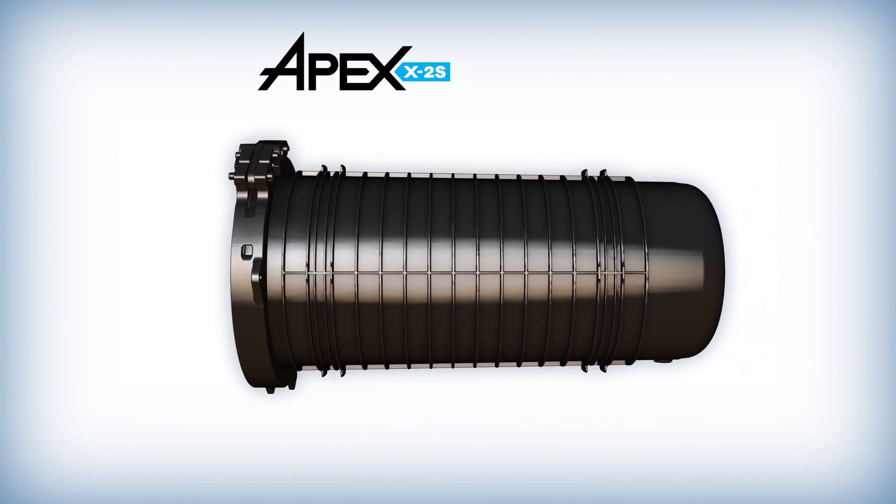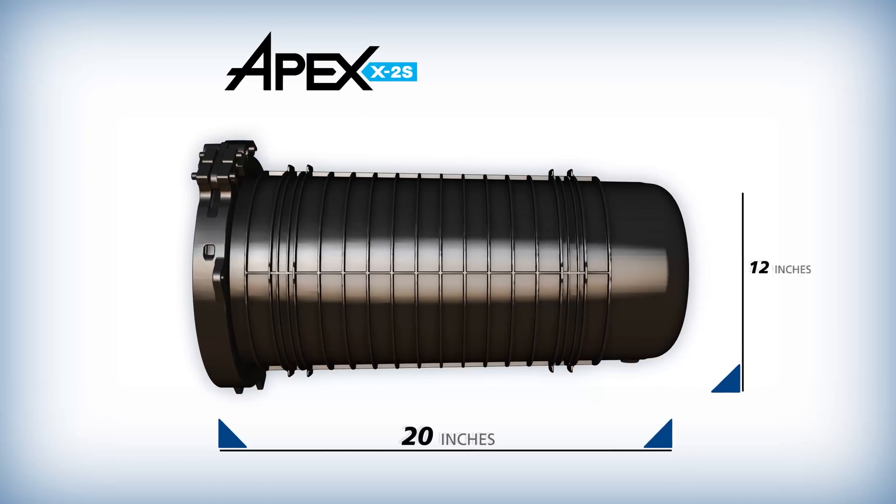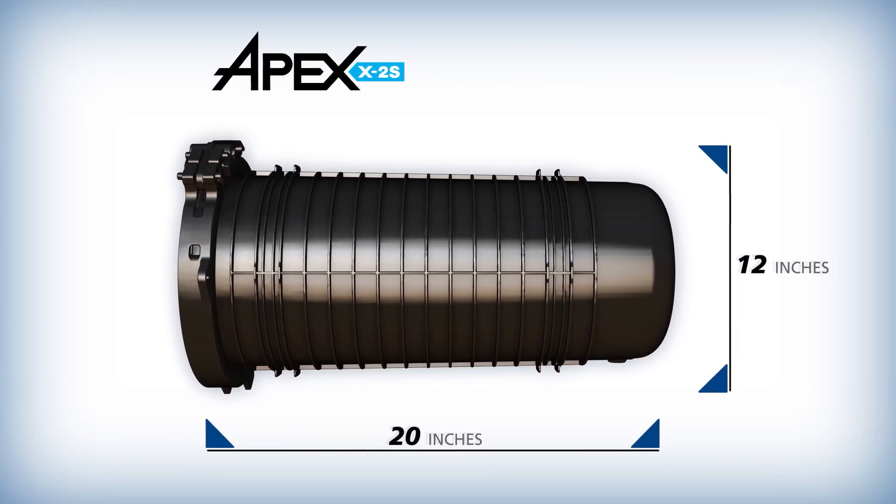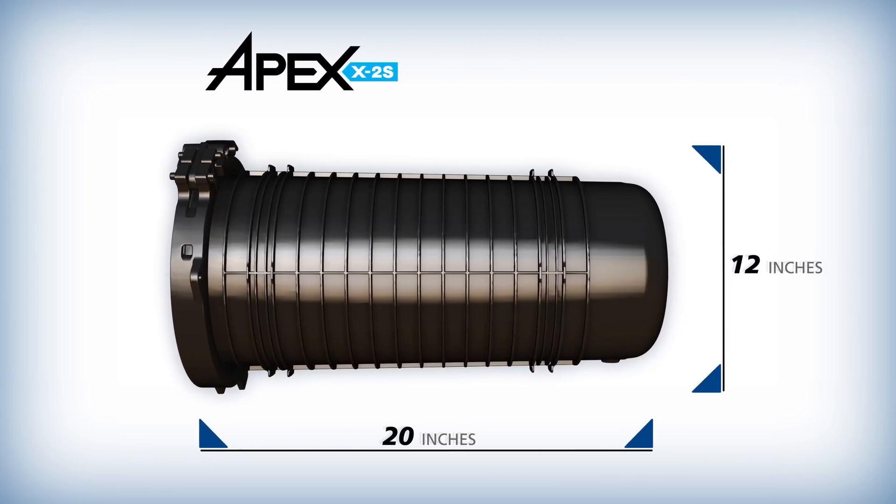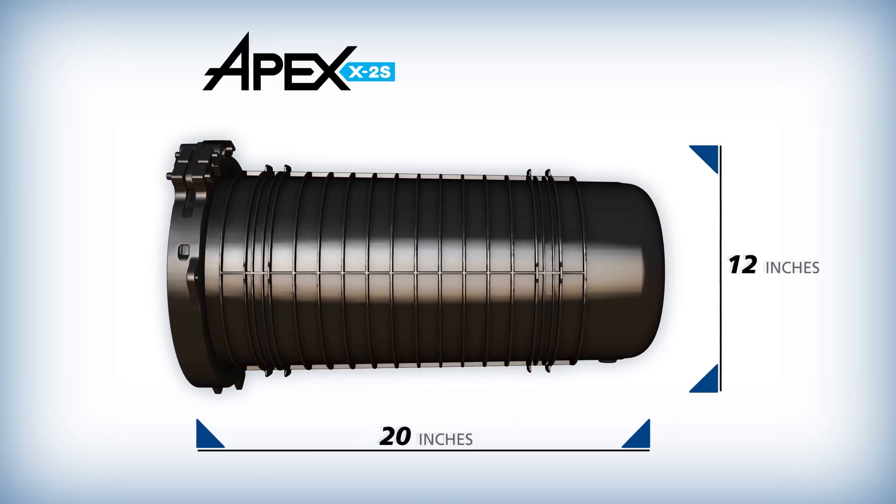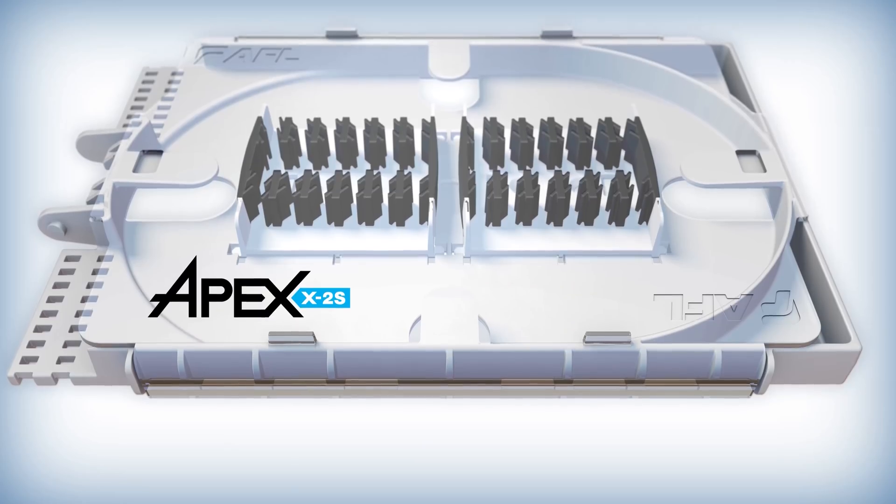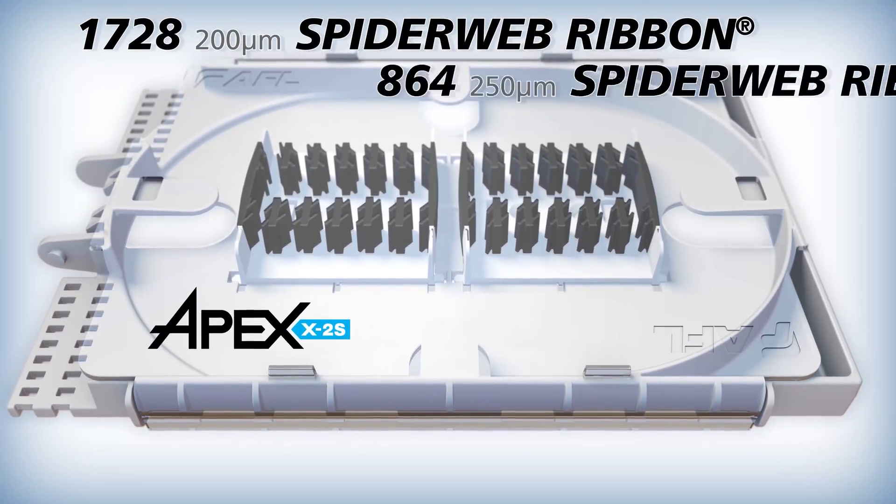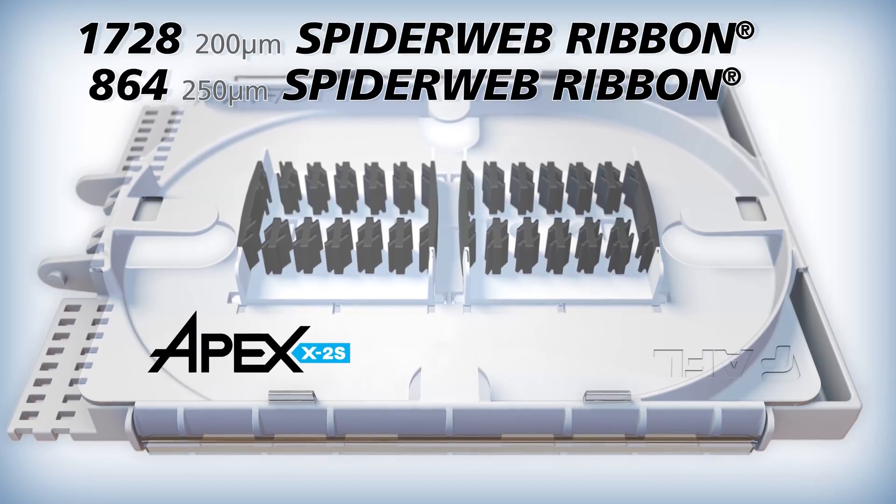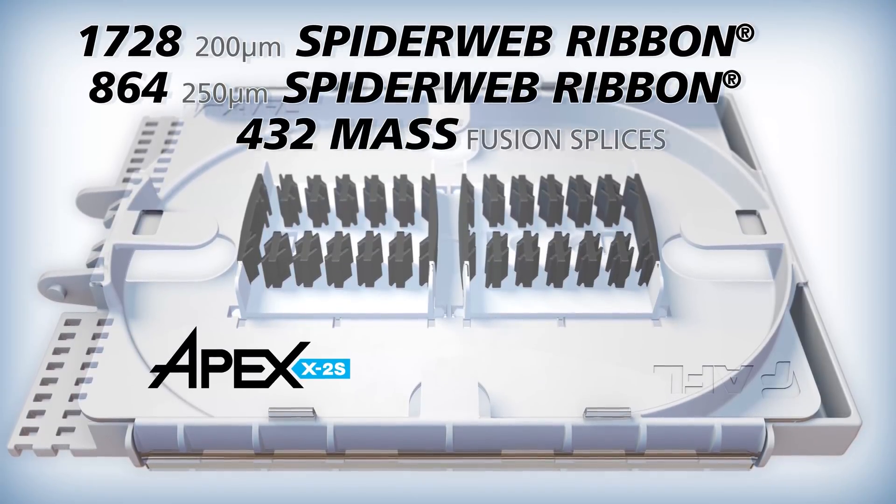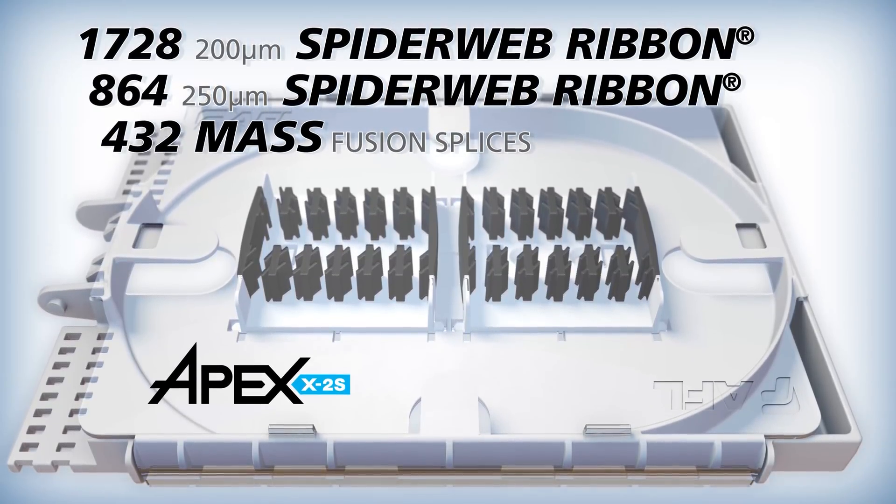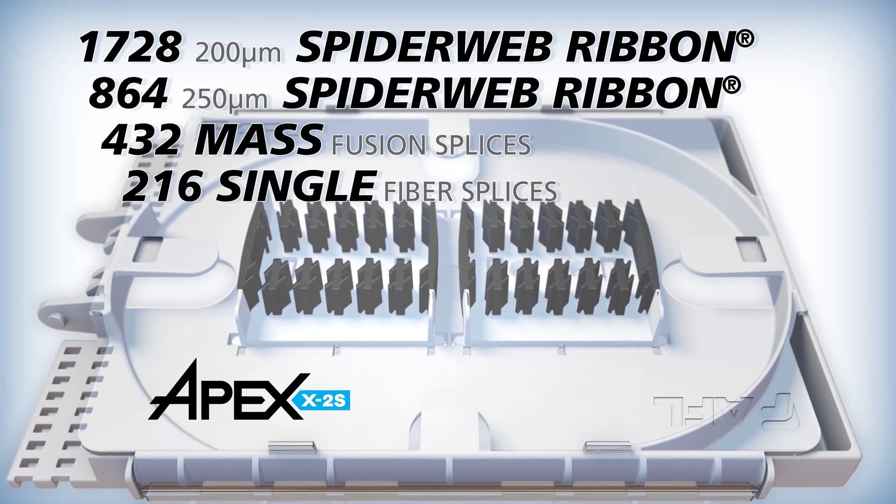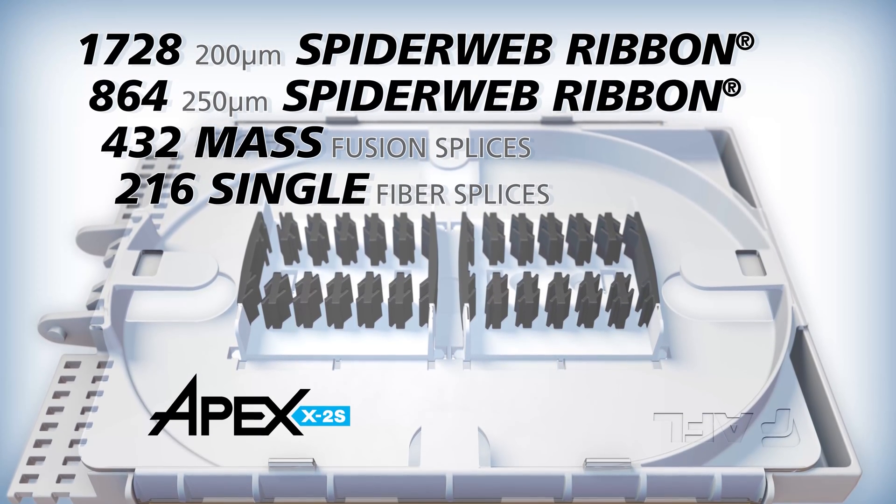The Apex X2S accommodates half the fiber density of the Apex X2 in a shorter 20-inch long dome designed for hand hole access. The Apex X2S houses up to 1,728 200 micron or 864 250 micron spiderweb ribbon splices, 432 standard mass fusion splices or 216 single fusion splices.